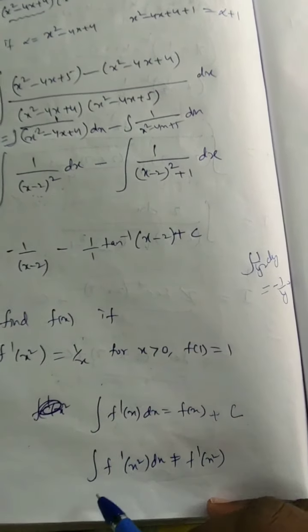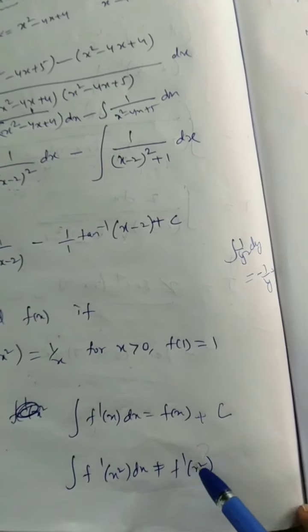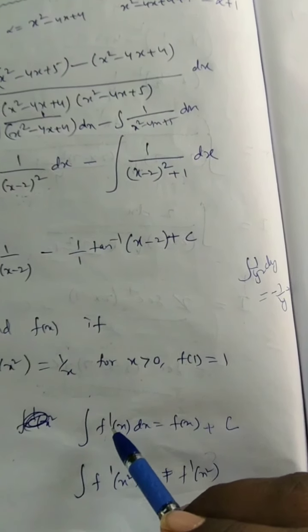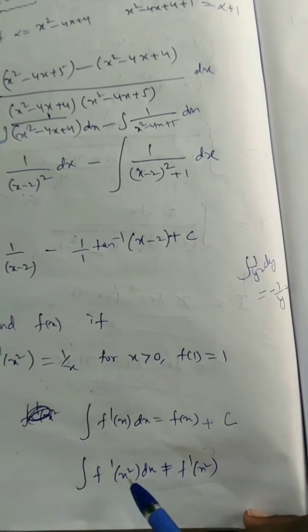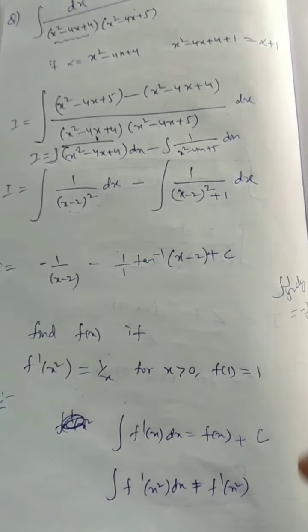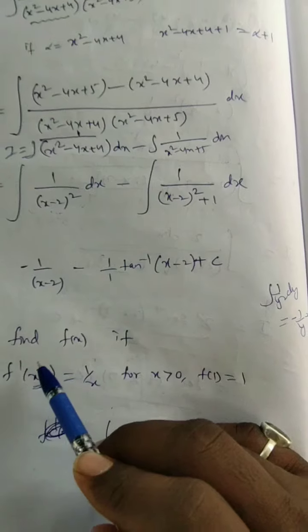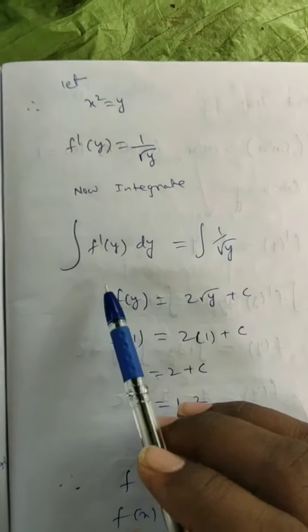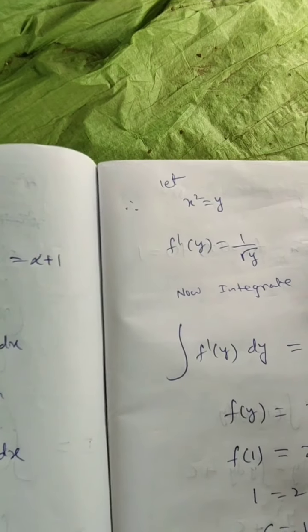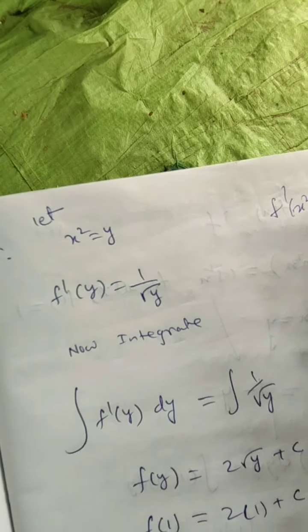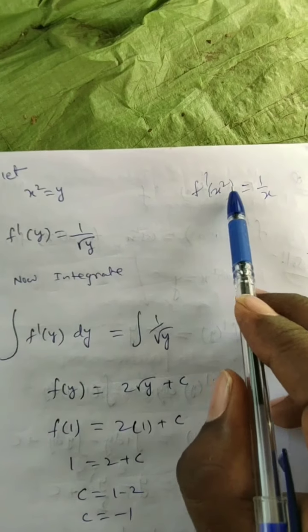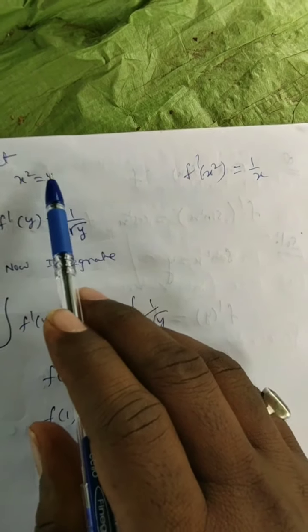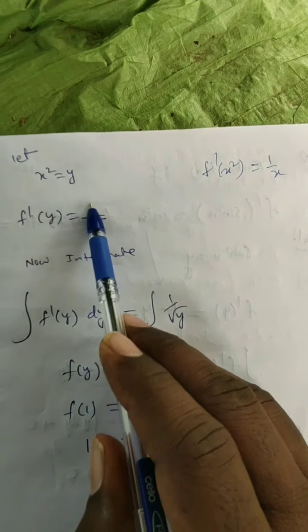To handle this, we substitute x² = y. Then f′(x²) becomes f′(y), and since x = √y, the right-hand side 1/x becomes 1/√y. So f′(y) = 1/√y.